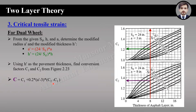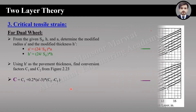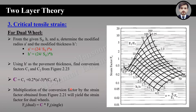By putting C1 and C2 into the equation we get a combined conversion factor C. Then using figure 2.21 we get a strain factor for a single wheel, and multiplying that strain factor by C gives the strain factor for dual wheel. The same equation applies: epsilon equals Q divided by E1 times F_E, where F_E is the strain factor for dual wheel.